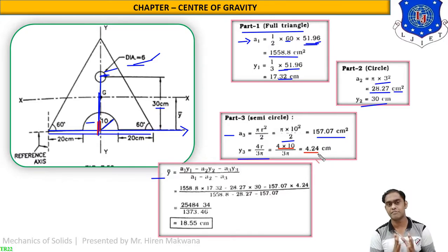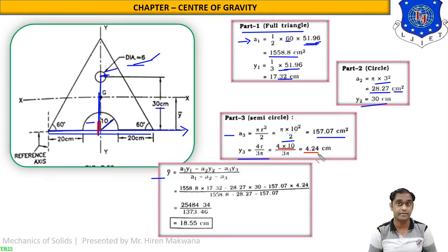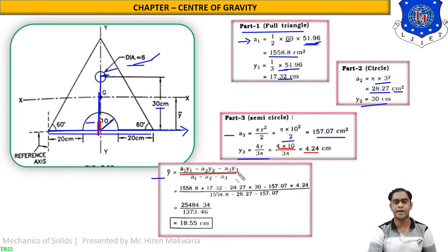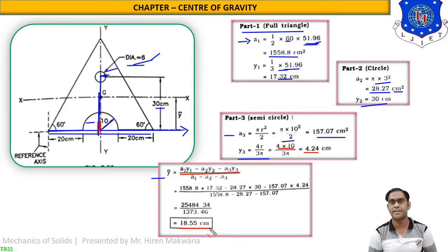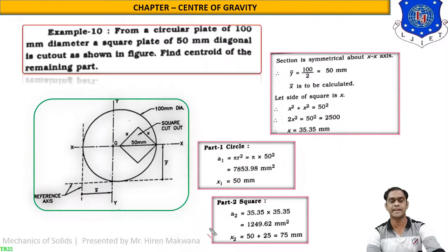The triangle is the positive section, from which we deduct the small circle and the semicircle. So y-bar = (A1·y1 − A2·y2 − A3·y3) / (A1 − A2 − A3). Substituting all calculated values, y-bar = 18.55 cm.